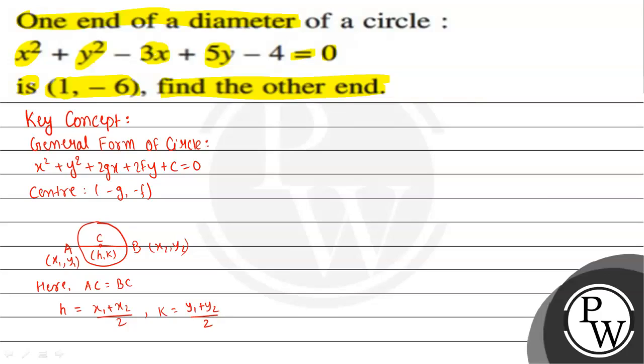The given equation is x² + y² - 3x + 5y - 4 = 0. Comparing with the general form, 2g = -3 and 2f = 5. Therefore, g = -3/2 and f = 5/2.